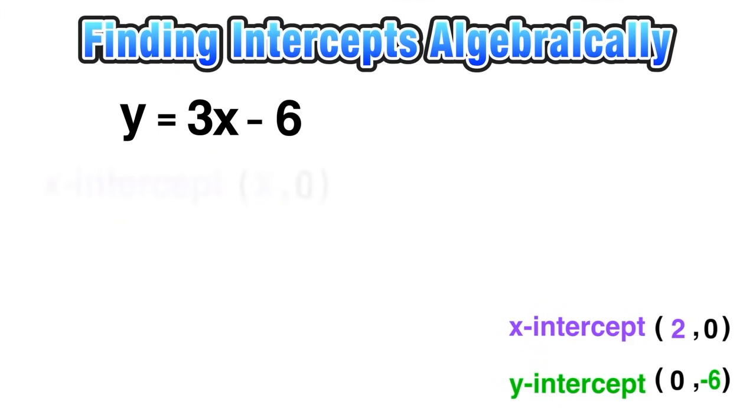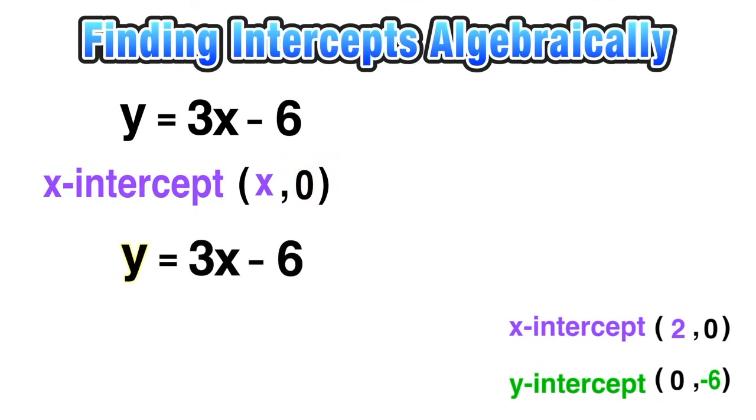I know we already know the x and y-intercept, but we want to prove it without using a graph. For the x-intercept, I know that my y-coordinate has to equal zero. So what we can do is replace y in the original equation with zero, because the y-coordinate has to equal zero, and now I can solve for x to find my x-intercept.